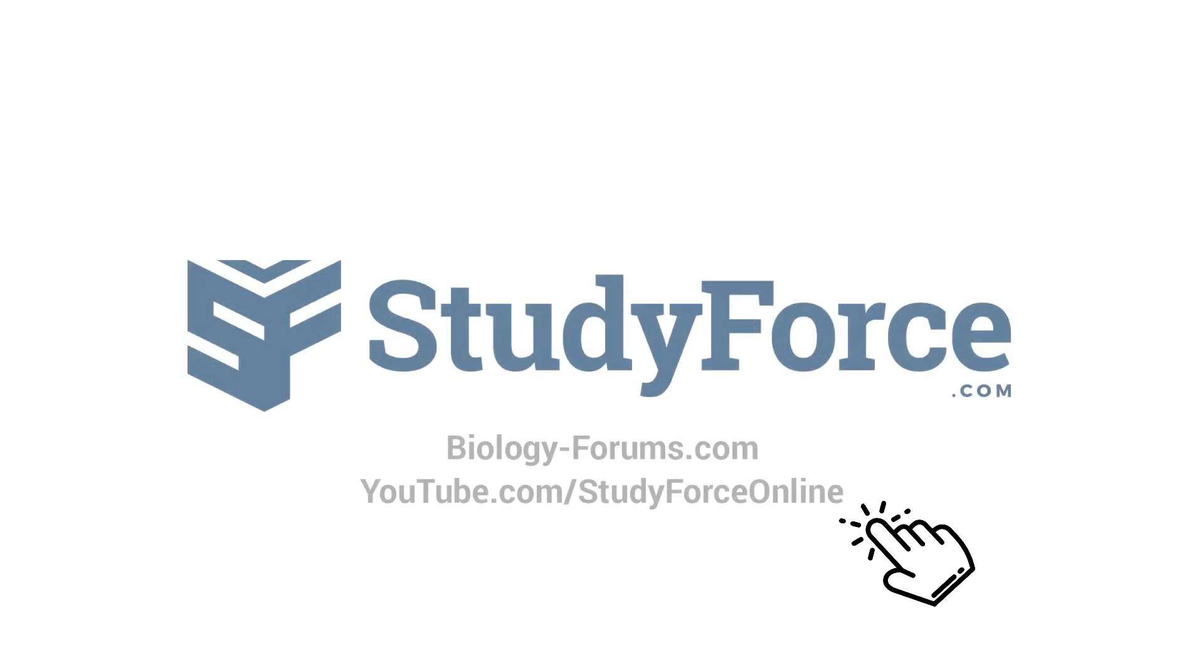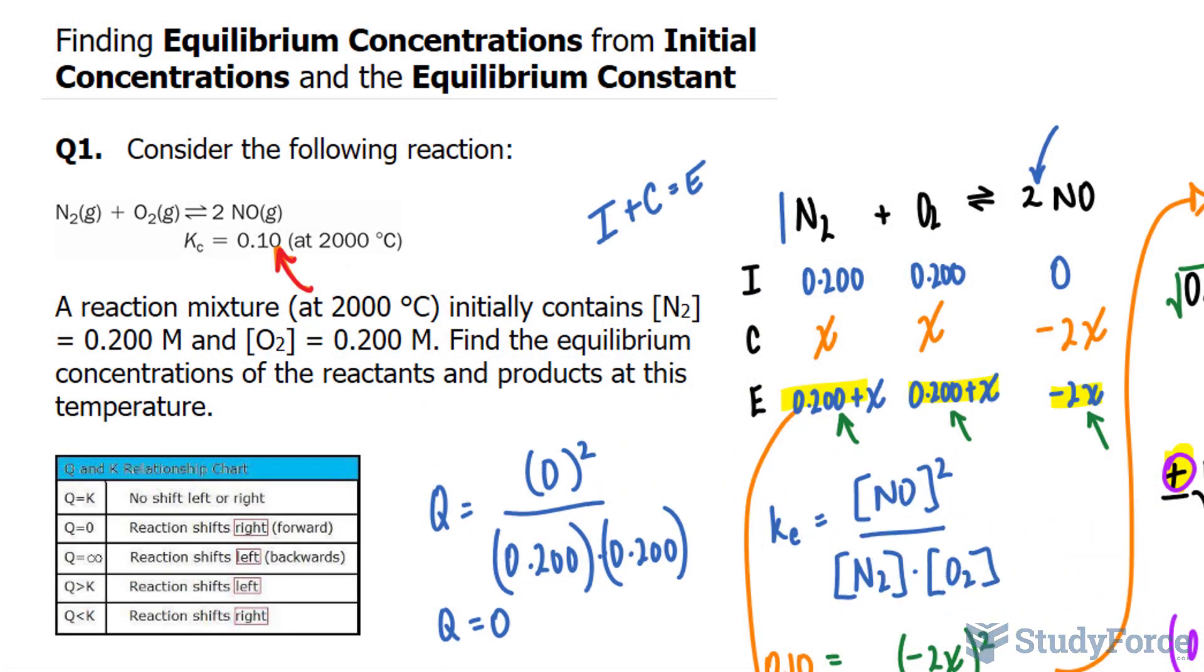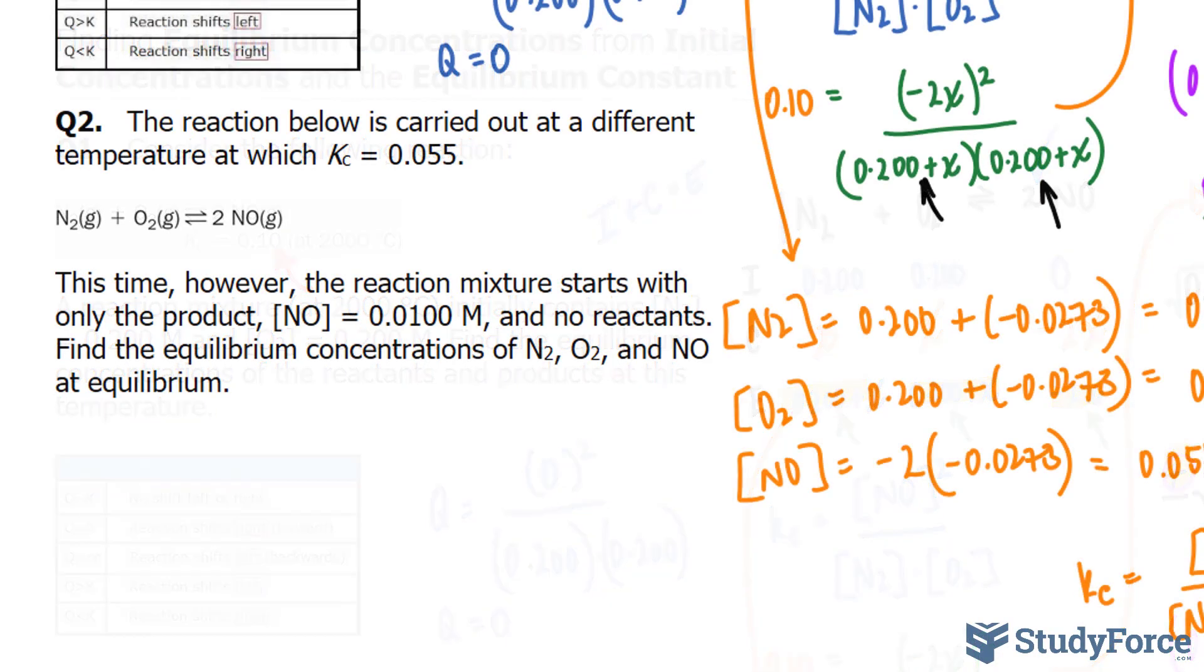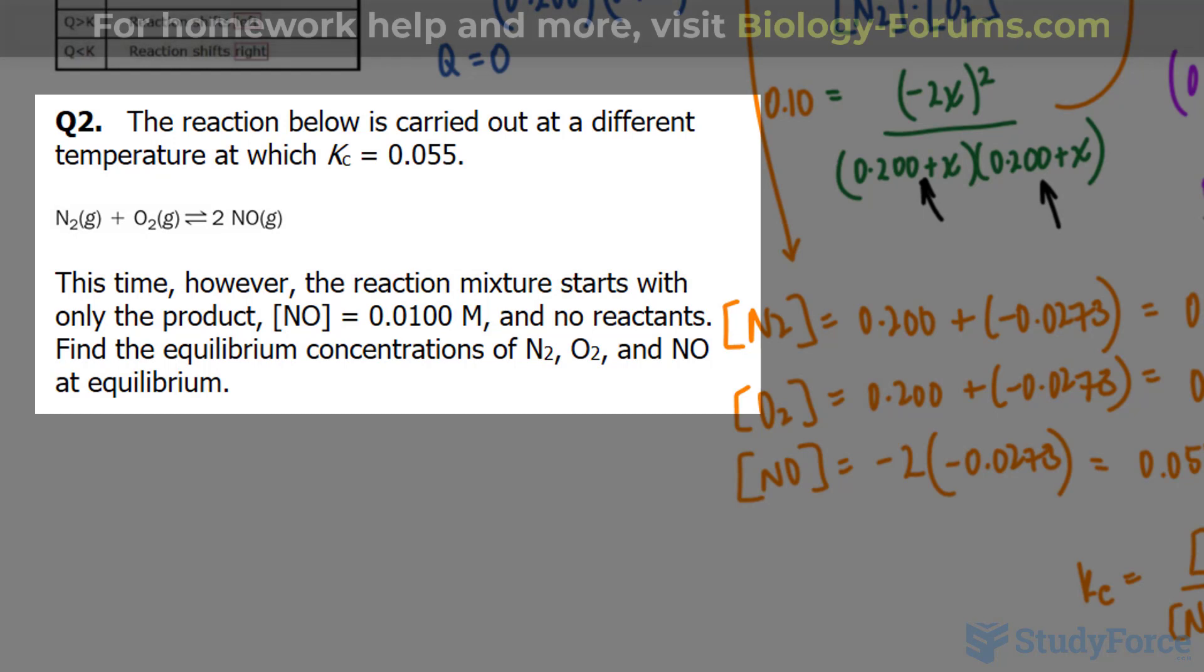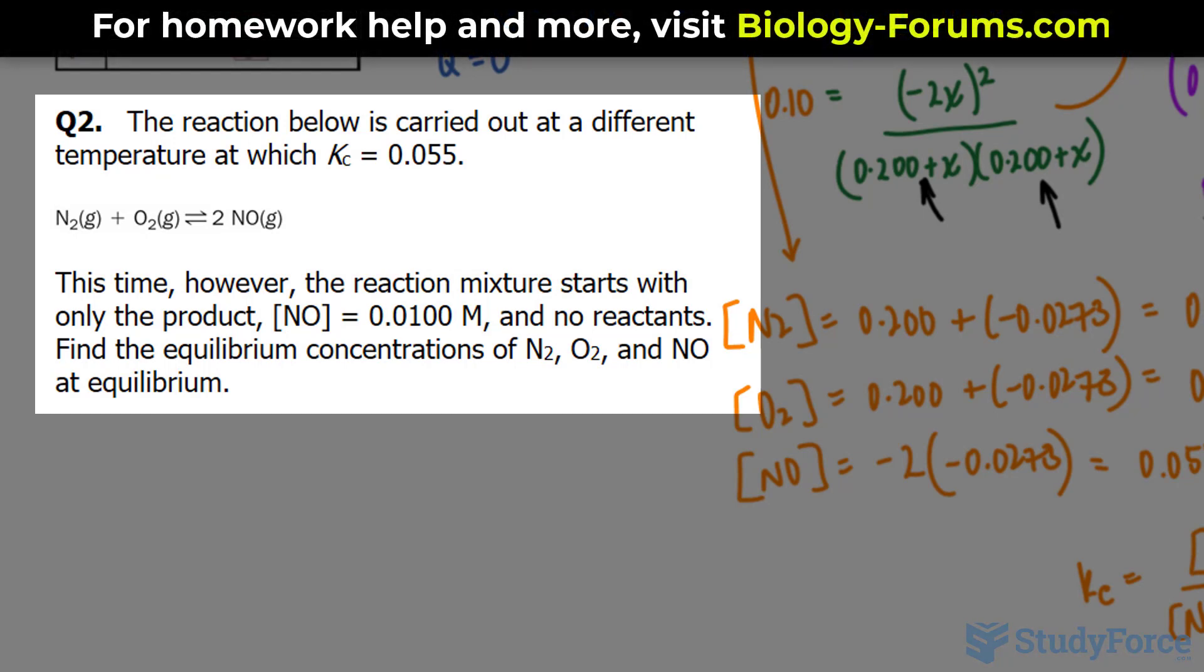Welcome back to question 2 of this series where we find the equilibrium concentrations from initial concentrations and the equilibrium constant. We ended off with the following question, which reads: The reaction below is carried out at a different temperature at which Kc, our equilibrium constant, is 0.055.